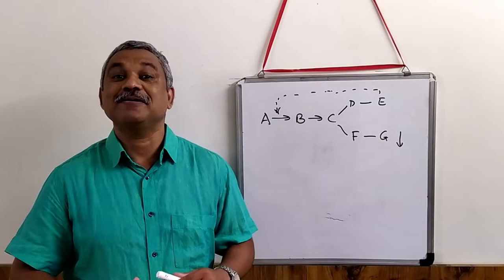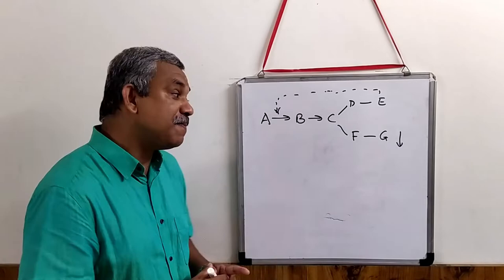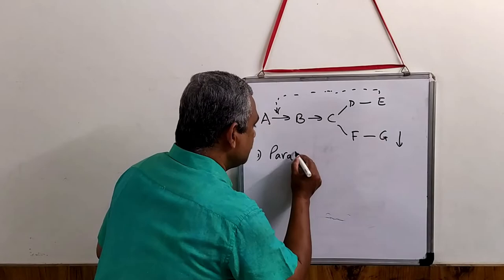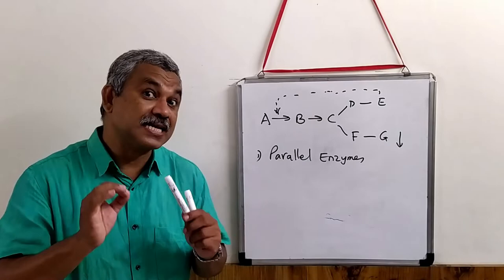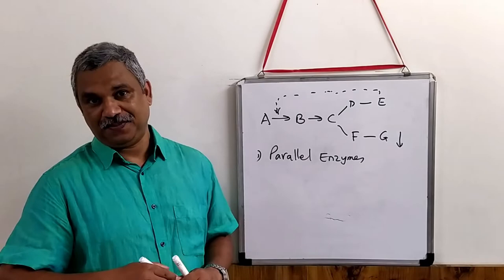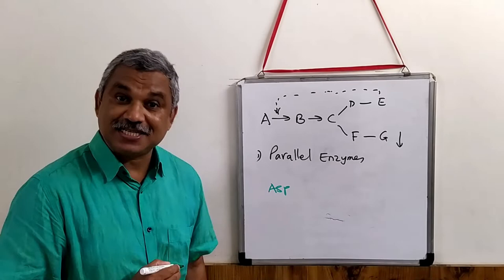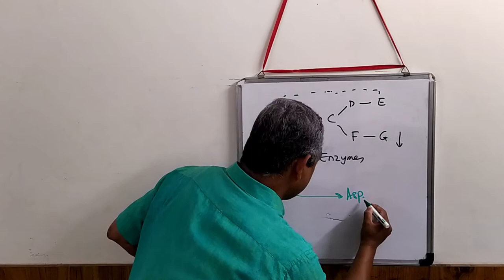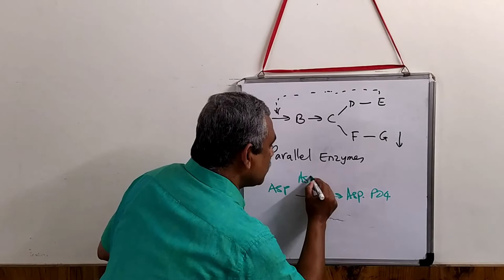There are several ways by which branched pathways are regulated. The first mechanism we are going to see is what is known as parallel enzymes. A classic example of parallel enzymes is what is seen in E. coli, where aspartate is converted to aspartyl phosphate by an enzyme known as aspartokinase.